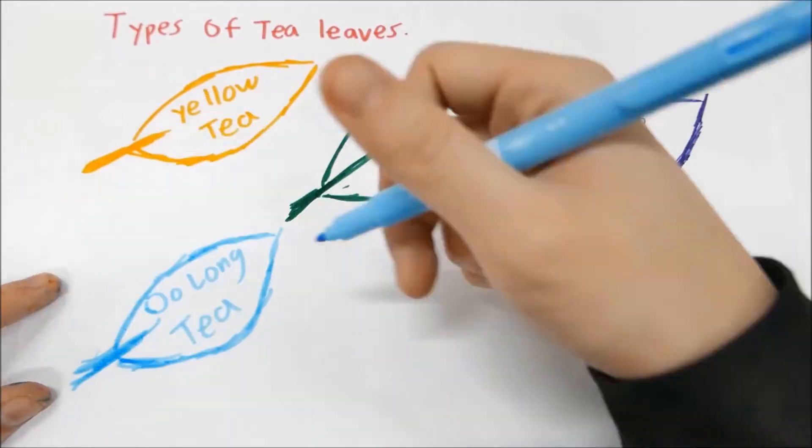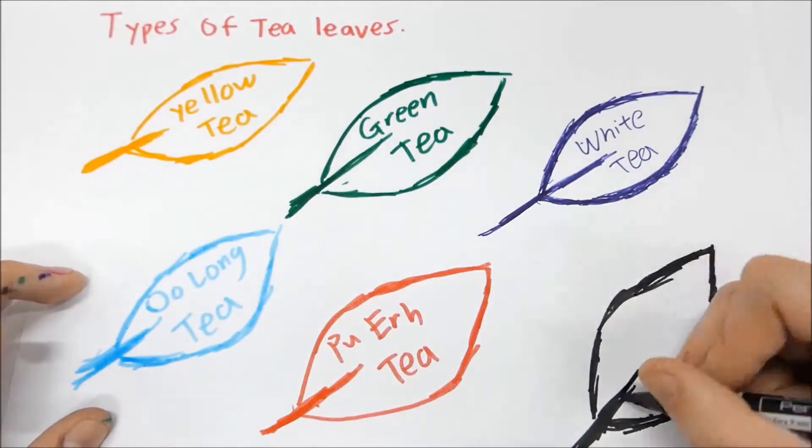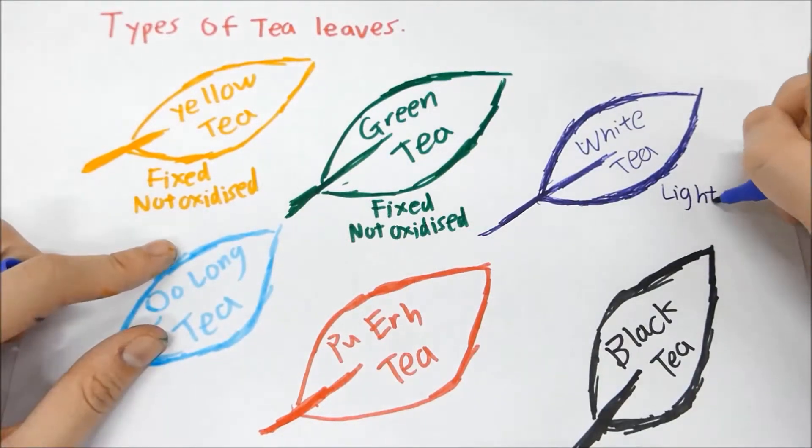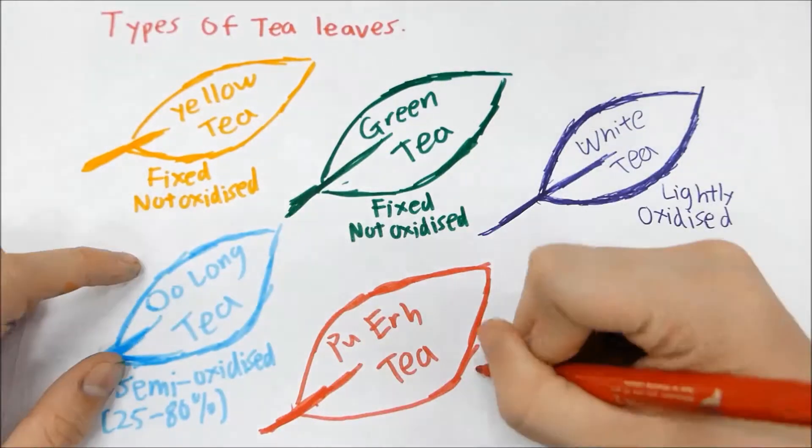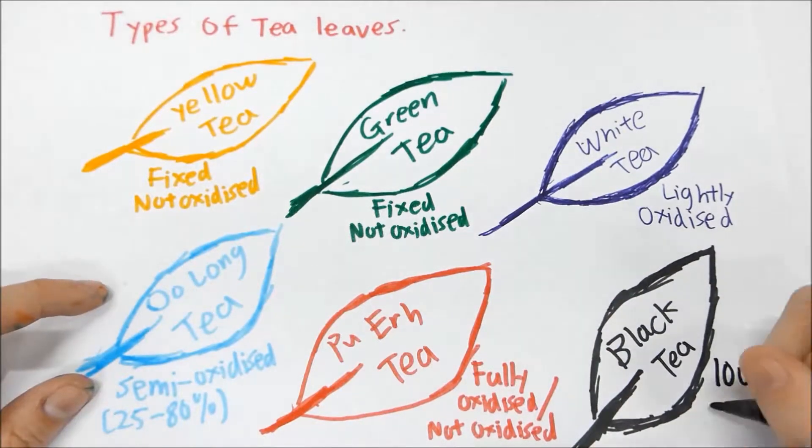The main distinct manner of grouping is based on the extent by which the tea leaves have been oxidized. Yellow tea and green tea are fixed and non-oxidized, white tea is lightly oxidized, oolong tea is semi-oxidized, pua tea is fully or non-oxidized, and lastly black tea is 100% fully oxidized.